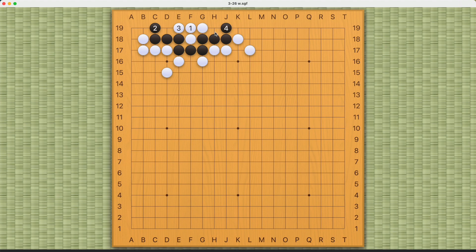Because if white wants to fill it in, it will have to fill in a five space eye, which is a living shape here. So it's best for white not to fill in.